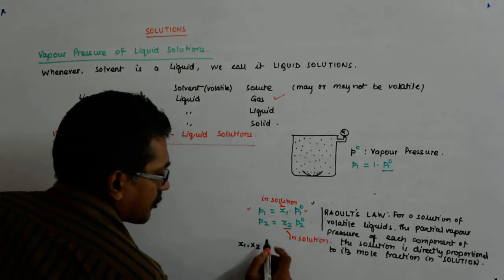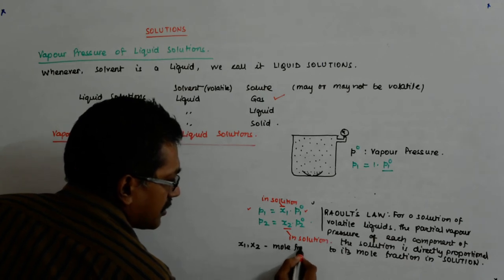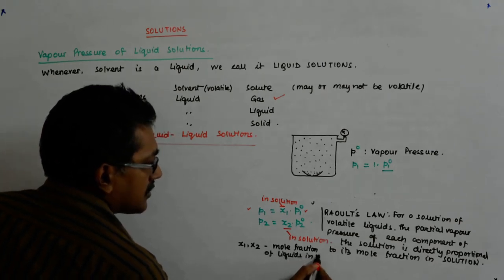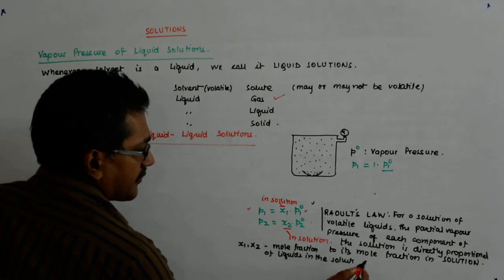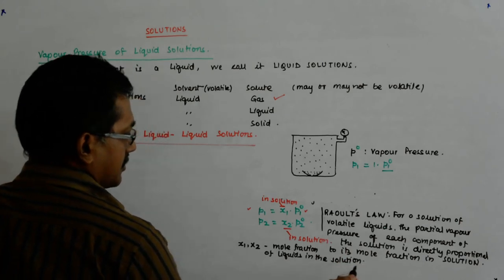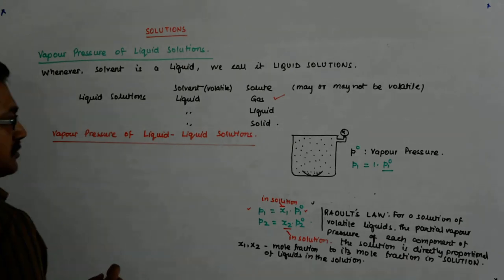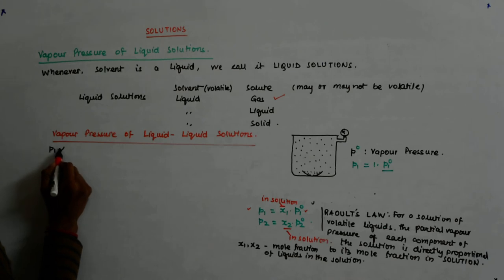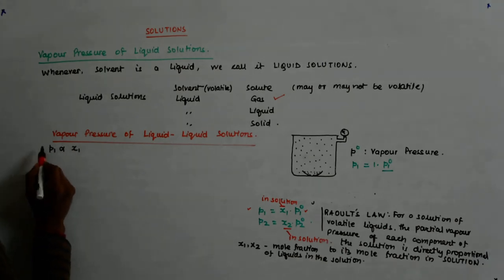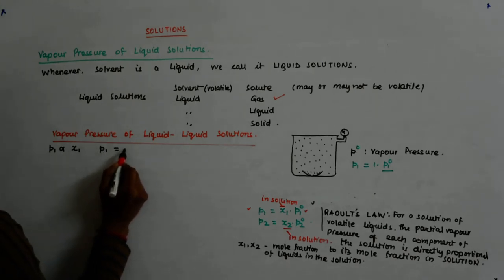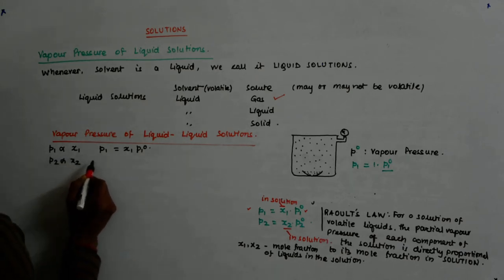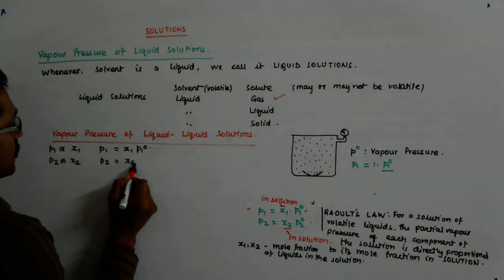In Raoult's Law, x1 and x2 are the mole fractions of liquids in the solution. So P1 is directly proportional to x1, giving P1 = x1·P1°, where the vapor pressure comes in as the constant of proportionality. Similarly, P2 is directly proportional to x2, so P2 = x2·P2°.